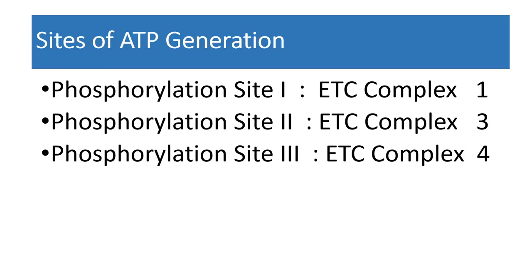There are three major sites where ATP is generated. Site one phosphorylation occurs in Complex I of the electron transport chain. Site two phosphorylation is found in Complex III. Site three phosphorylation occurs in Complex IV. During the flow of electrons through the ETC, a lot of free energy is released, and much of this energy is conserved in the form of ATP at these three energy-conserving phosphorylation sites.